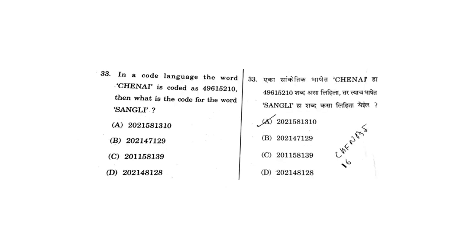This next question was a bit easier. Chennai is coded as 49615210. It is just like A, B, C, D — but instead of denoting A as 1, it should be denoted as 2. Accordingly, if you follow that, the answer is A. So this was it.